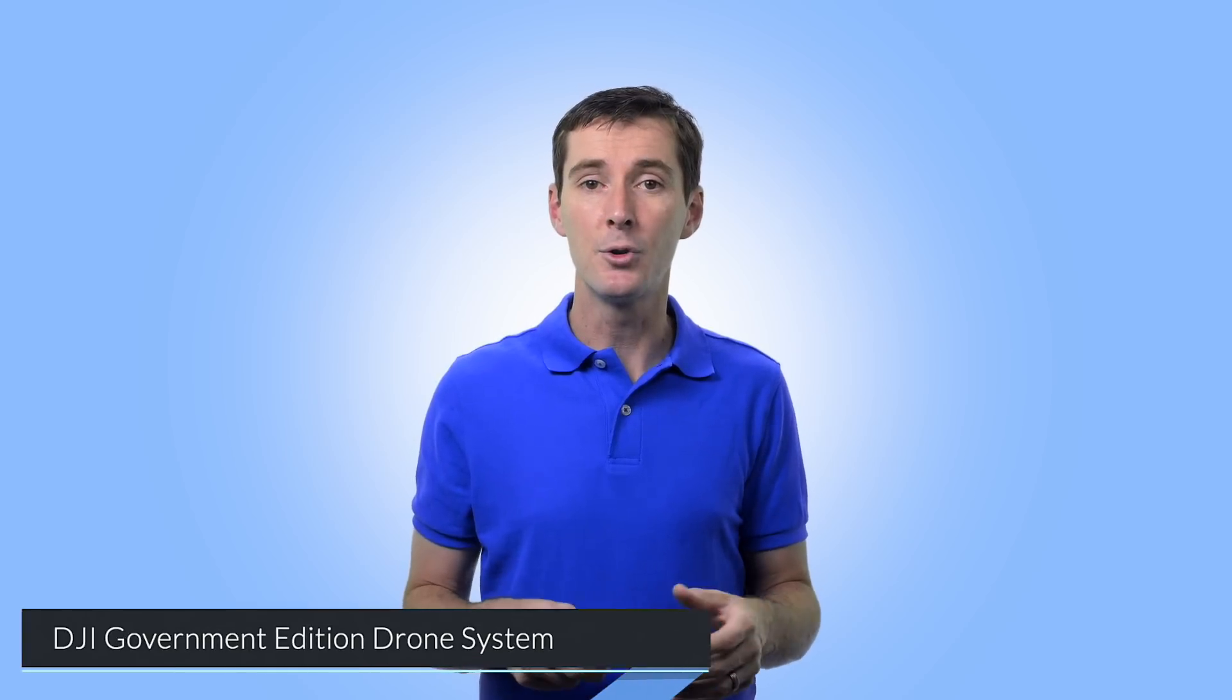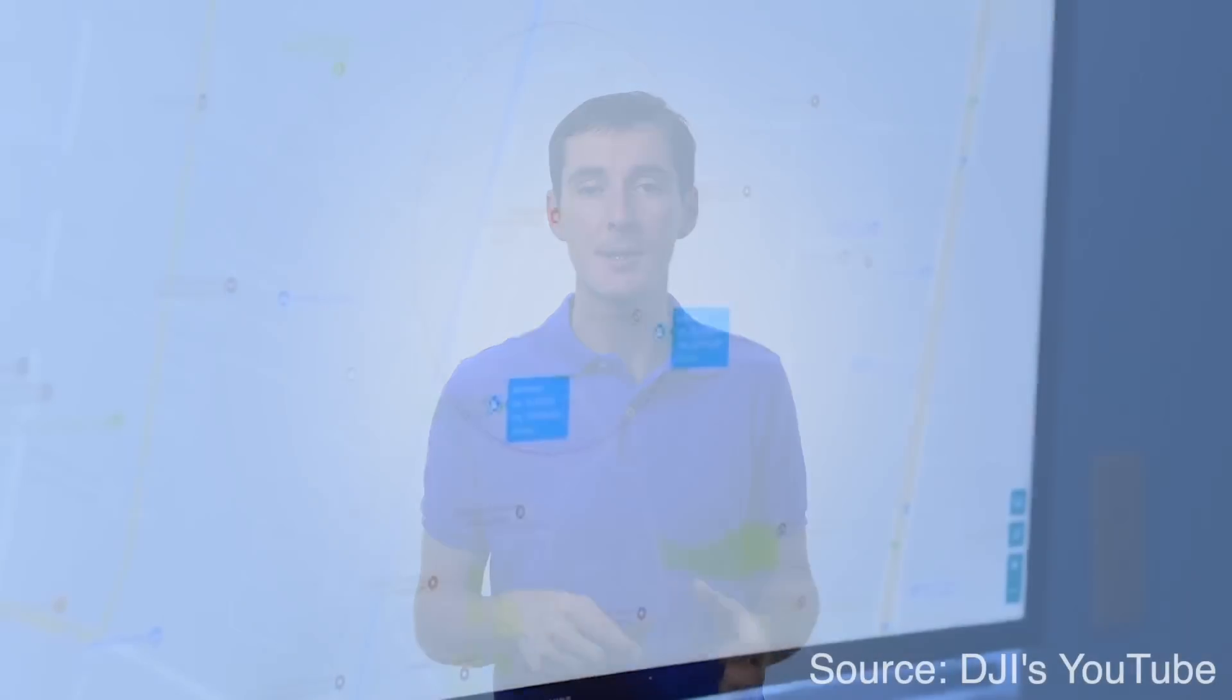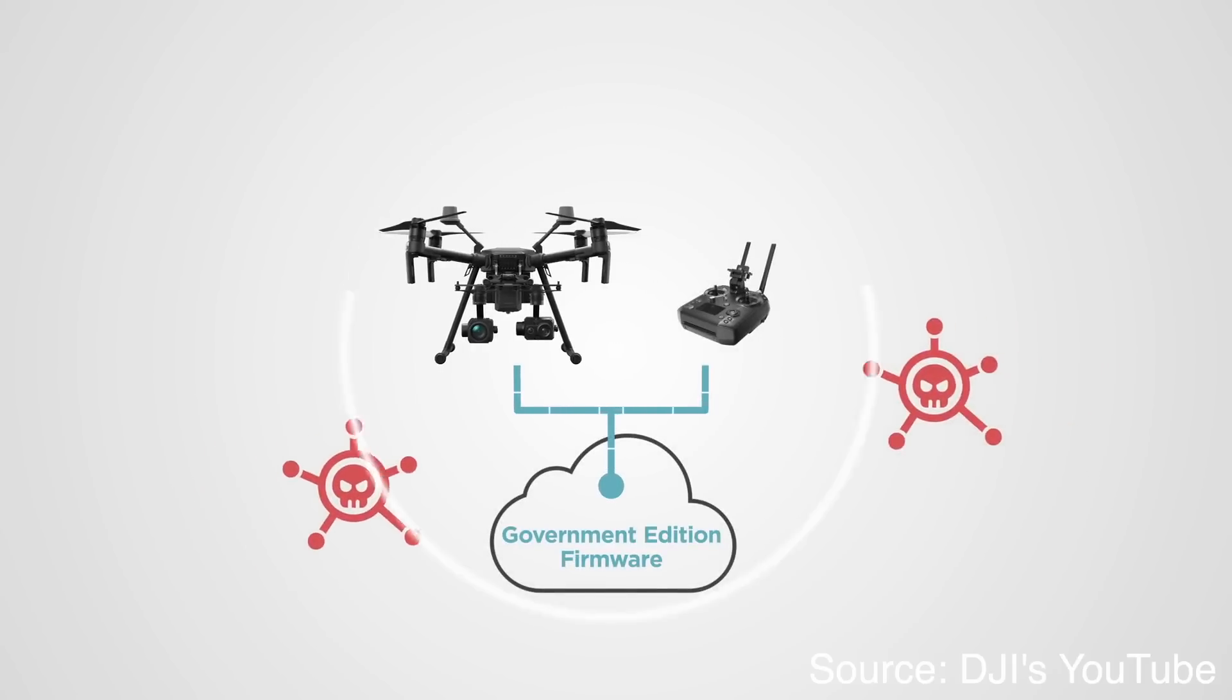Now, in addition to this letter, what they did this week is they released a new program called the DJI Government Edition drone system. Now, in that drone system, basically what's going to happen is that the drone is not going to be connected, or the controller connected to the internet during the flight, which means that all the data stays in the drone and there is no access to the internet at all during that time.